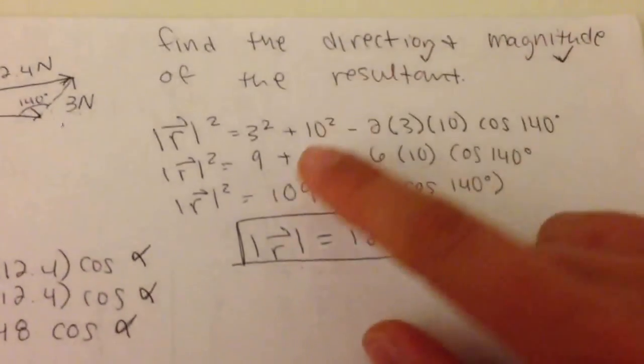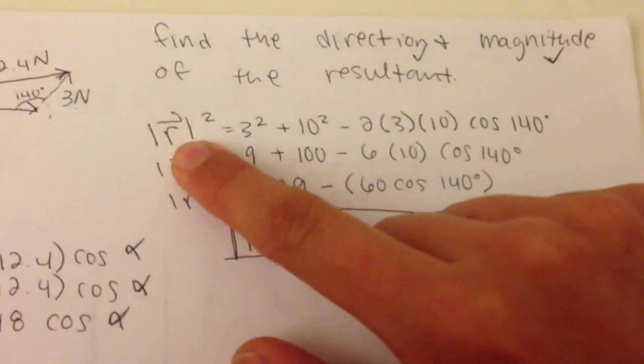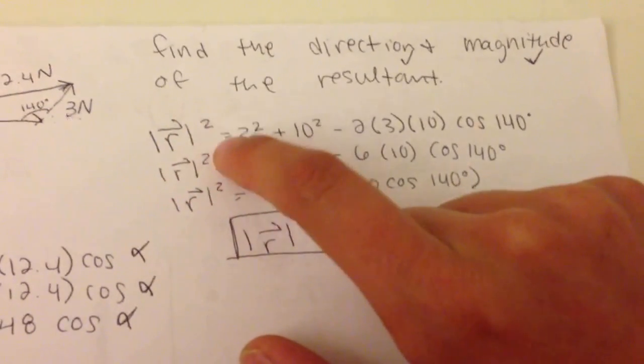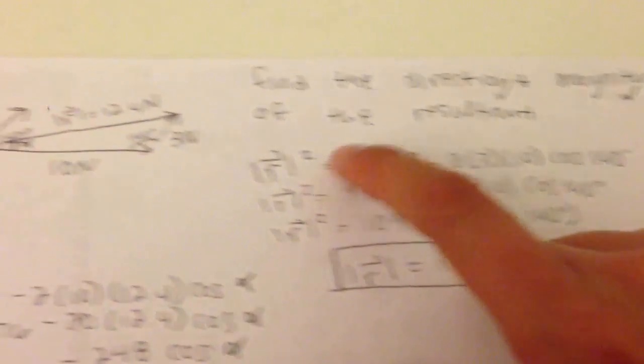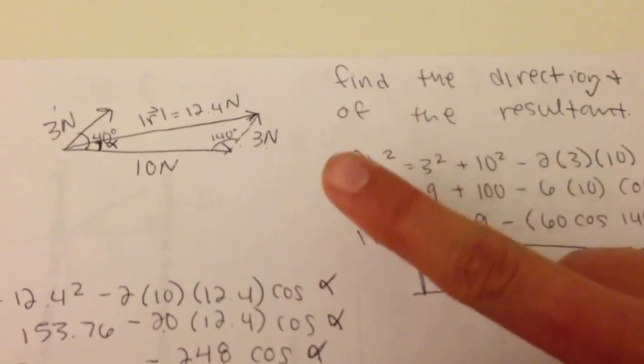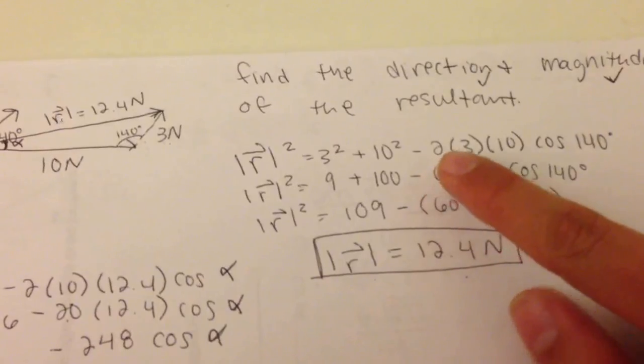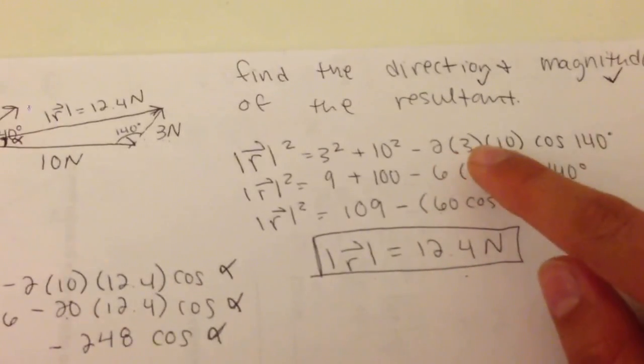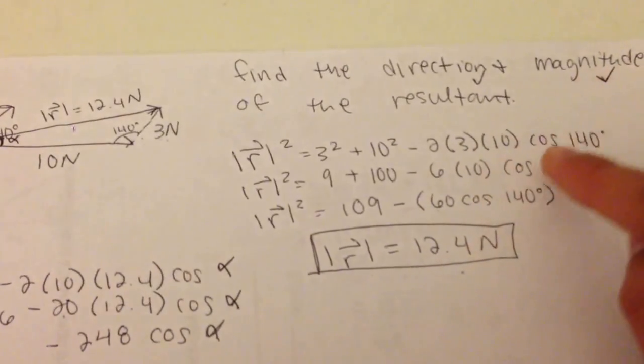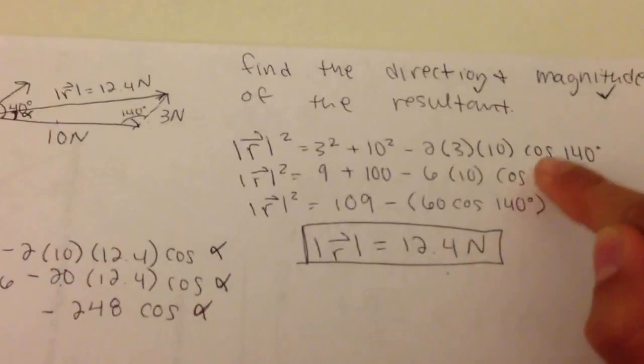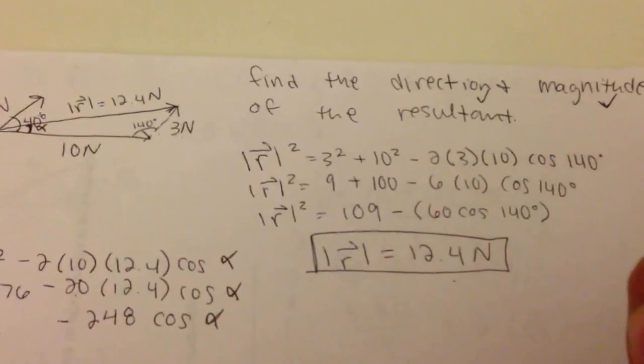Now we can solve for our resultant. So here we solved for our resultant. We have the magnitude of the resultant squared equals 3 squared, which is the side length, plus 10 squared, which is our other side length, minus 2 times 3 times 10 times cosine of the angle 140. Always make sure your angle is the one across from what you are trying to solve.